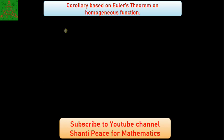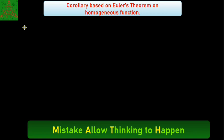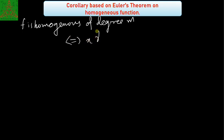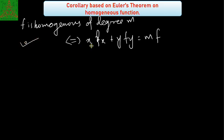Welcome to Santhi Peace for Mathematics. In this video we are going to discuss the application of Euler's theorem for homogeneous functions. Euler's theorem states that if f is homogeneous of degree m, if and only if x·fx plus y·fy is equal to m·f. For those who don't know how to prove this, we have already prepared a video lecture for that. The objective of this video is to express the same kind of expression for second order derivatives.